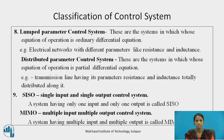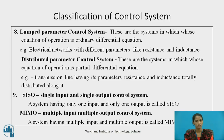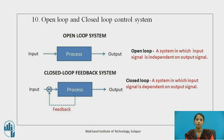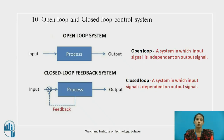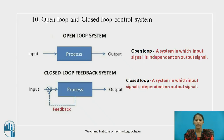A system having only a single input and single output is called a SISO control system. A system having multiple inputs and multiple outputs is called a MIMO control system. Open loop control system: a system in which the input signal is independent of the output signal — the input is given to the process and we get the output. Closed loop control system: a system in which the input signal is dependent on the output signal — the output is fed back to the input so that the output is controlled.